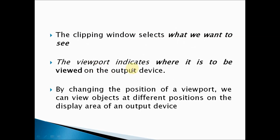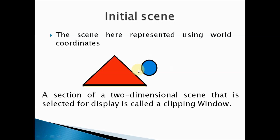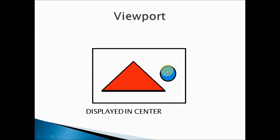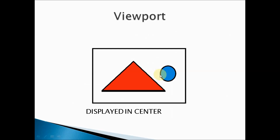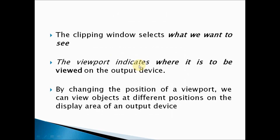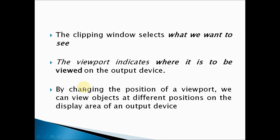The viewport indicates where the selected content is to be displayed on the output device. After selecting the portion from the clipping window, I need to choose where to display it. A viewport is the display area where content from the clipping window is shown. The clipping window selects what we want to see; the viewport determines where it is displayed.